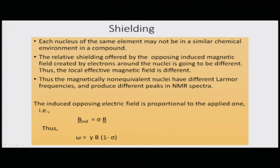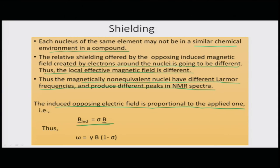Each nucleus of the same element may not be in a similar chemical environment in a compound — this is one of the most important aspects of NMR acting as spectroscopy. The relative shielding offered by the opposing induced magnetic field created by electrons around the nuclei differs, so the local effective magnetic field is different. Magnetically non-equivalent nuclei have different Larmor frequencies and produce different peaks in NMR spectra.